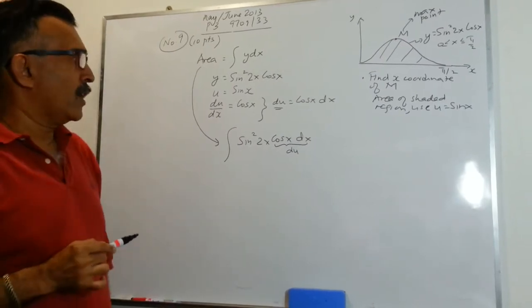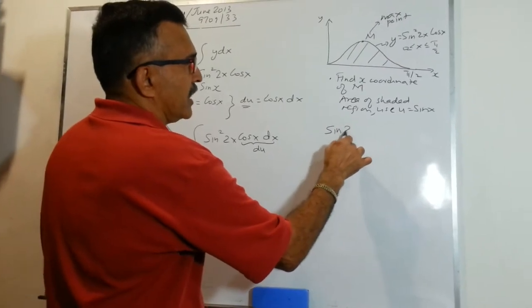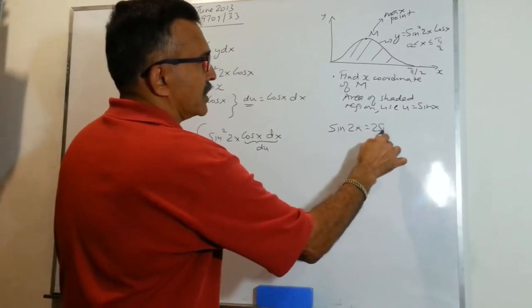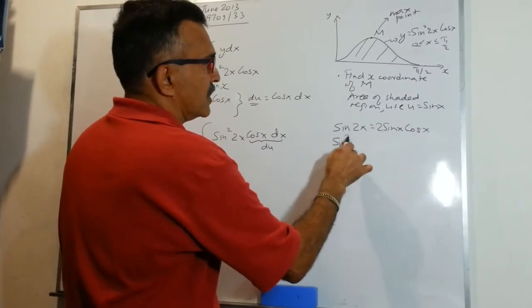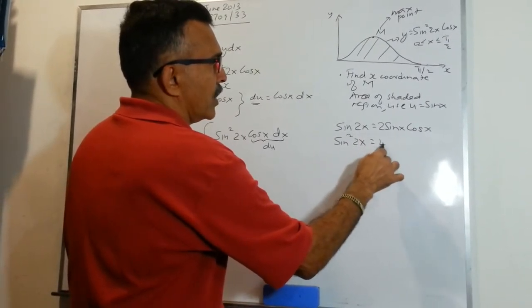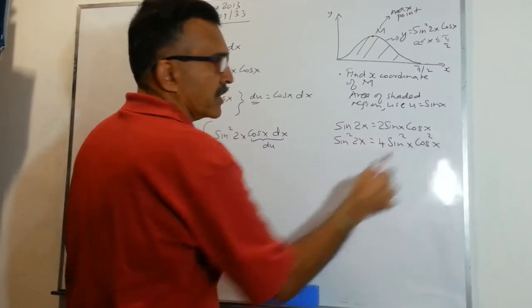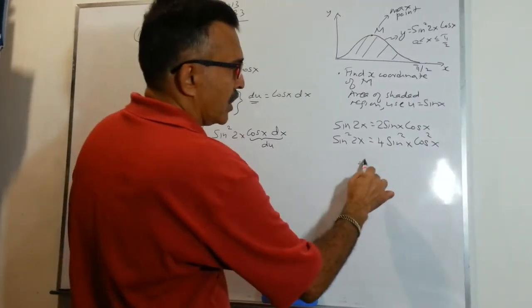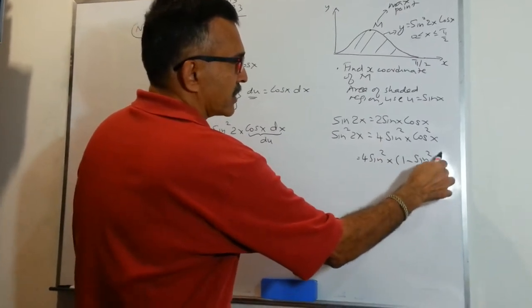Now we need to take care of sin squared 2x. So let's do that here. Sin 2x we know is 2 sin x cos x. So sin squared 2x will be 4 sin squared x cos squared x, which will be 4 sin squared x times 1 minus sin squared x.